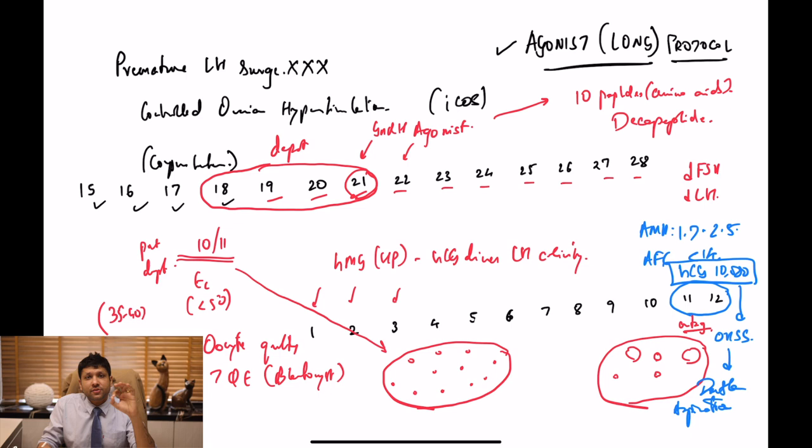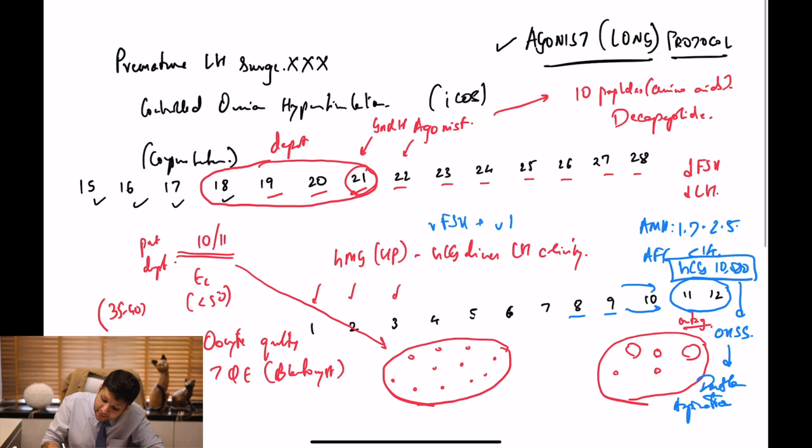There are some more additional points which are important as far as agonist protocol is concerned. When you are in an agonist protocol, the number of days of stimulation instead of routinely 8 or 9 days could extend to approximately 10 to 11 days. If you are using just recombinant FSH, the combination of recombinant FSH plus recombinant LH is going to be much better in the agonist protocol because of the huge LH suppression. Some amount of LH is mandatory to get that good quality of oocytes. We are going to have a master class on FSH and LH and the 2-cell 2-gonadotropin theory.